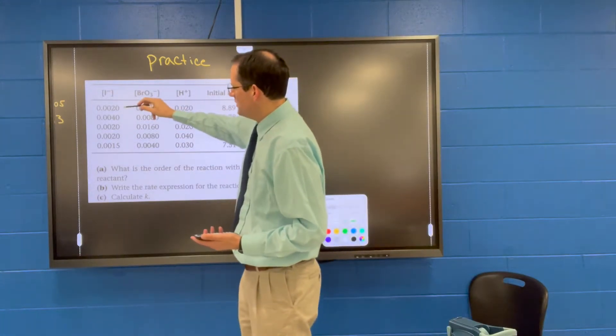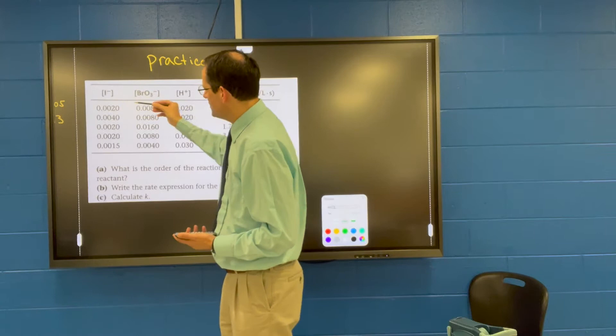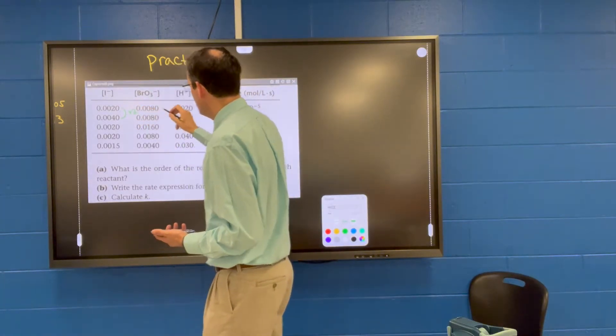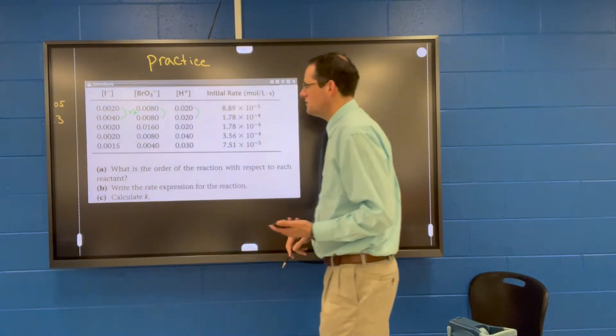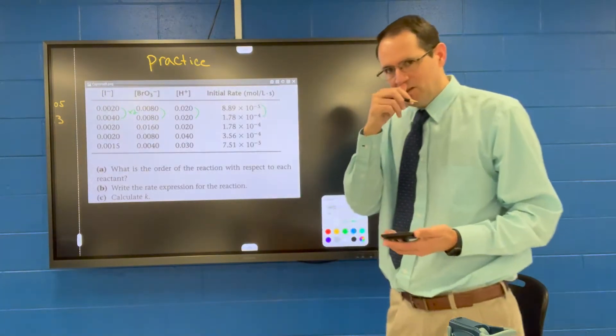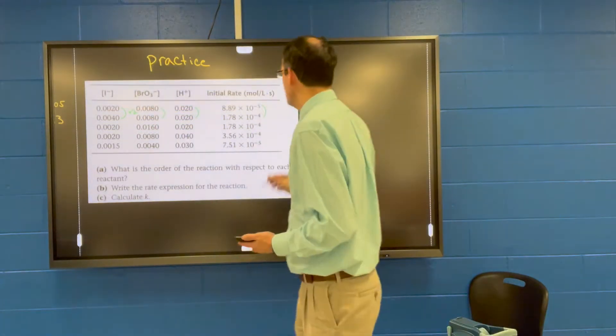So if we look at experiments, the first two experiments here, we can see that the concentration of iodide is going up by times two. Bromate is staying constant, hydrogen ion is staying constant, so we want to take these two ratios of rates to calculate a ratio, to try to figure out what the order of reaction is for I minus.